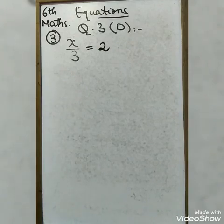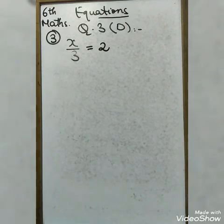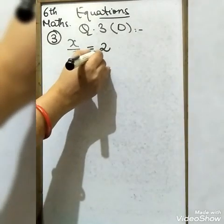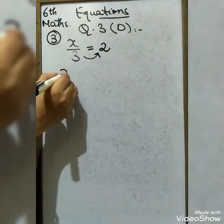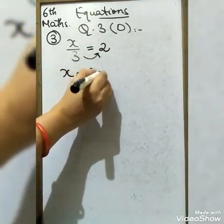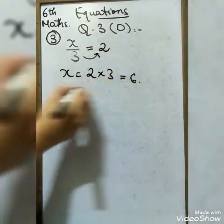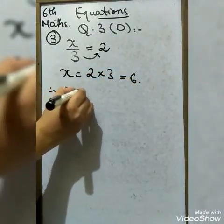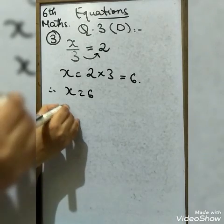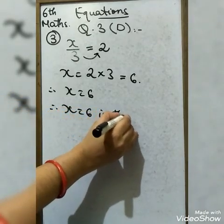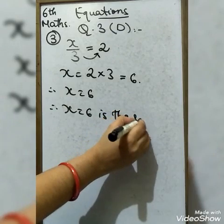Third: x ÷ 3 = 2. Moving 3 to the other side: x = 2 × 3 = 6. Therefore x = 6 is the solution.